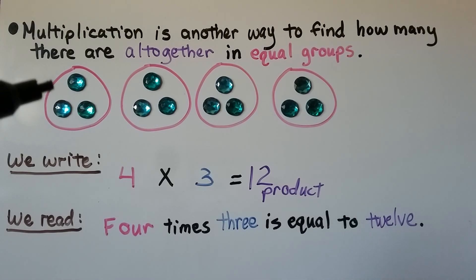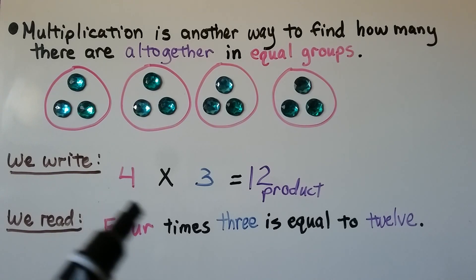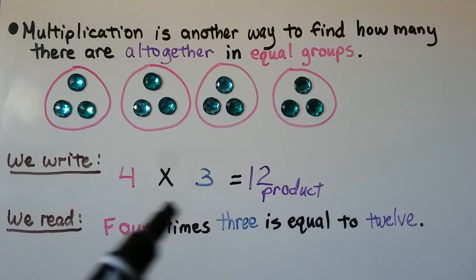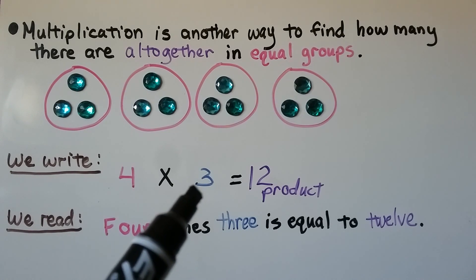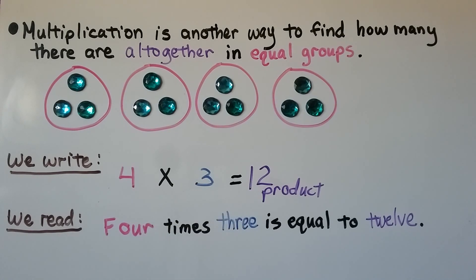Multiplication is another way to find how many there are altogether in equal groups. We have four groups of three, so we write four times three. The four is for how many groups, and the three is for how many are in each group. It's equal to twelve — that's our product. We read: four times three is equal to twelve.